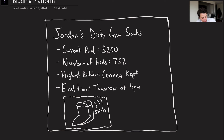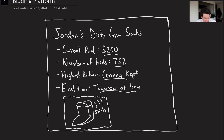So our bidding platform is similar to eBay but with a lot more scale. For example: Jordan's Dirty Gym Socks — a hot commodity — with a current bid of $200, 752 total bids, Karina Koff as the highest bidder, ending tomorrow at 4 p.m., with a photo of the item. They're quite stinky, hence why everyone wants them.